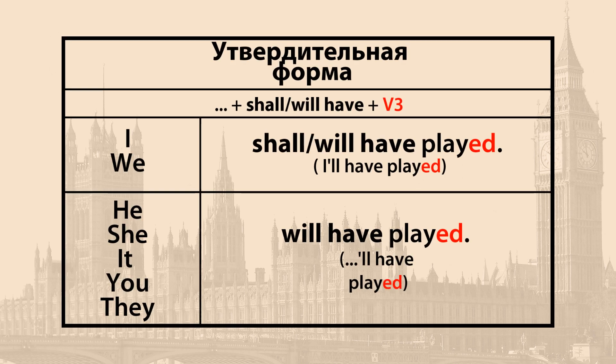Исторически с местоимениями I и we использовалось shall. Но в современном английском языке существует тенденция употреблять will со всеми лицами. Давайте рассмотрим примеры. Утвердительное высказывание во Future Perfect будет выглядеть так.